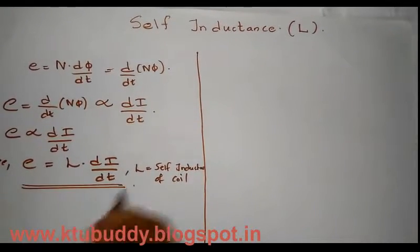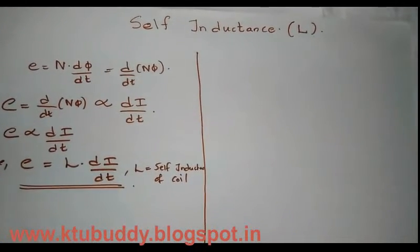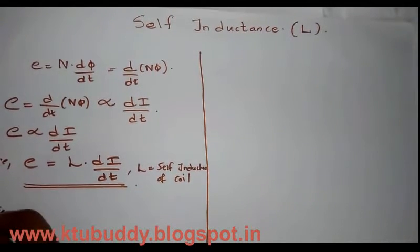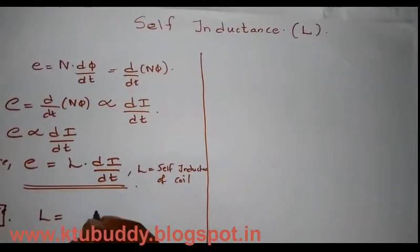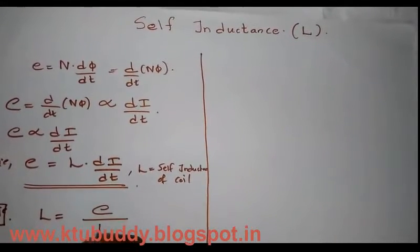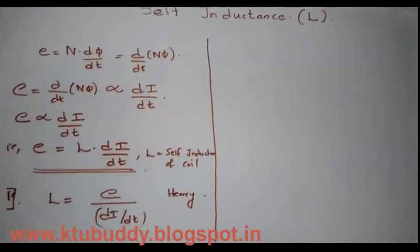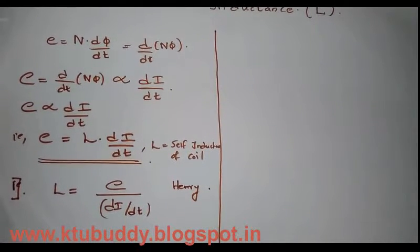This is the primary expression for induced EMF considering self-inductance. From this expression, we can write the first expression for self-inductance: L is equal to the induced EMF divided by the rate of change of current, di/dt. The unit of self-inductance is henry.